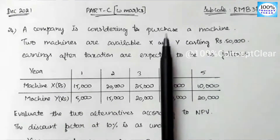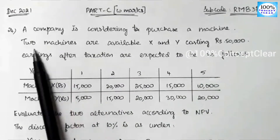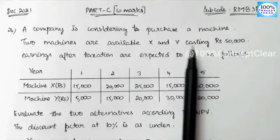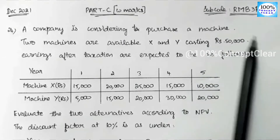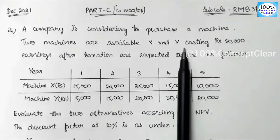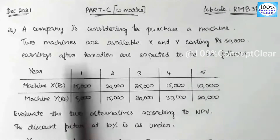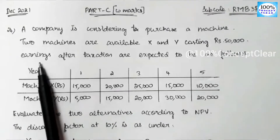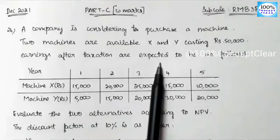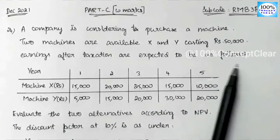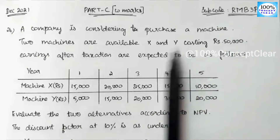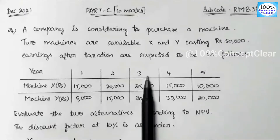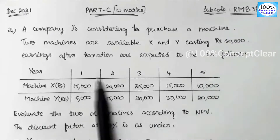The company has to purchase two machines — one is X and one is Y — and the investment value is $50,000. We will calculate how many earnings are in each machine. Earnings after taxation are expected to be as follows. The machine life is 5 years.